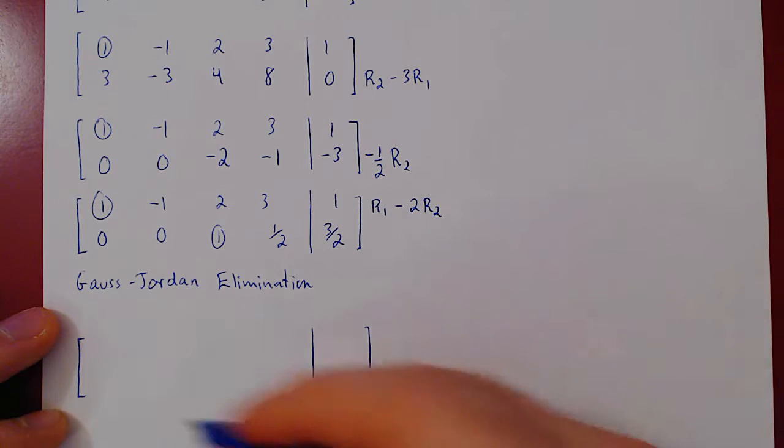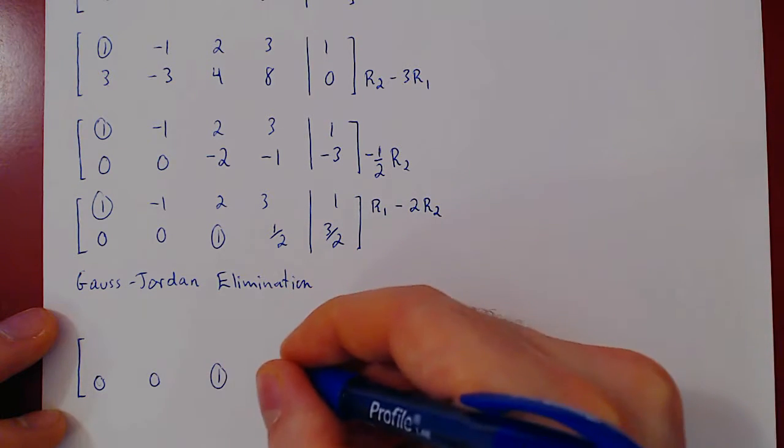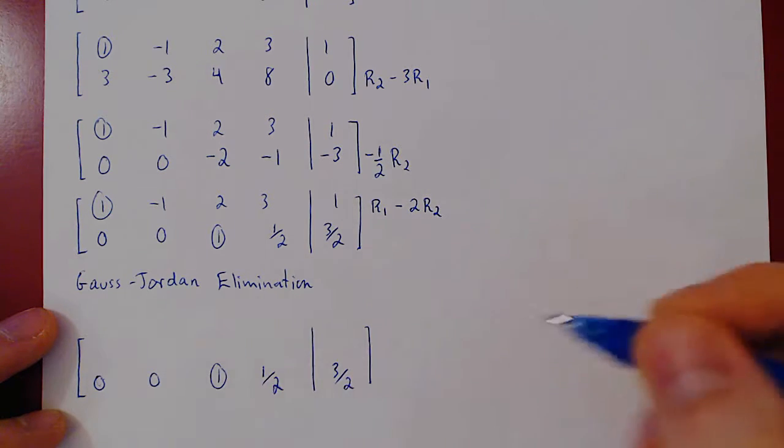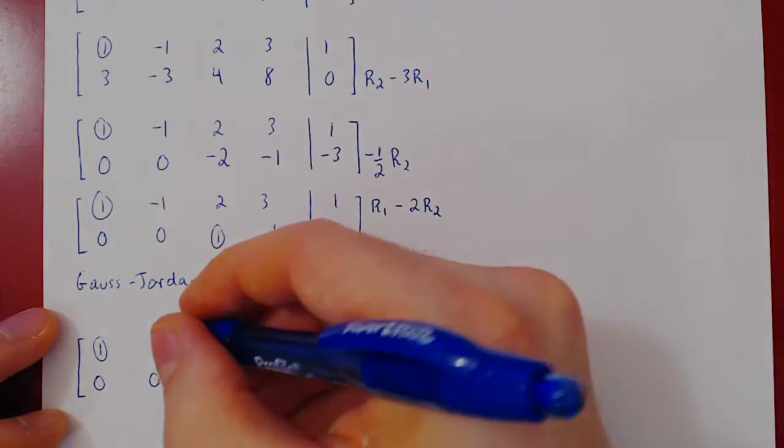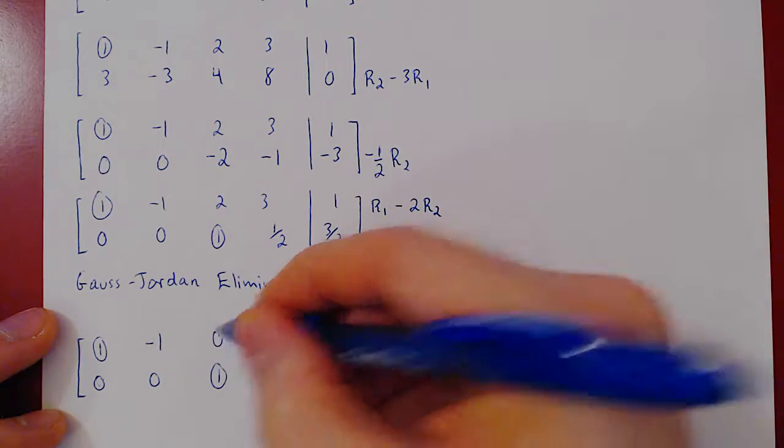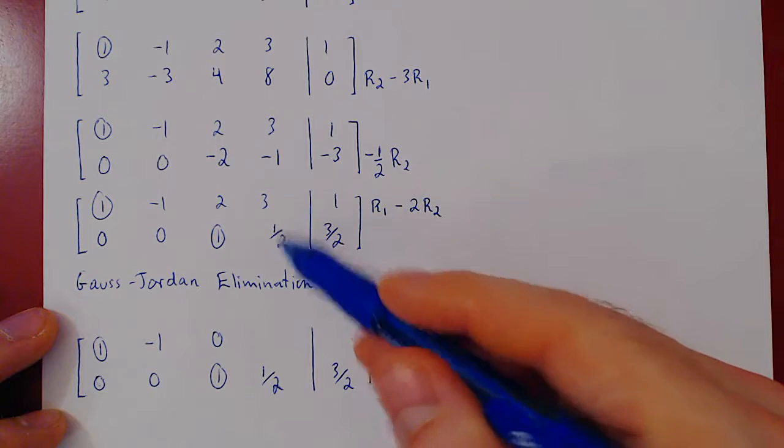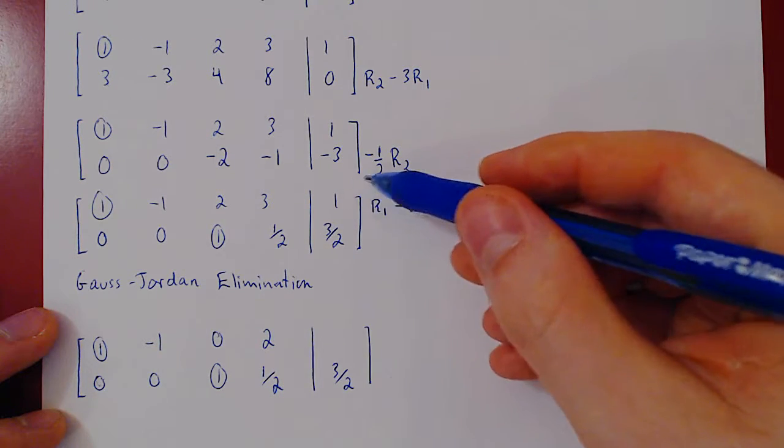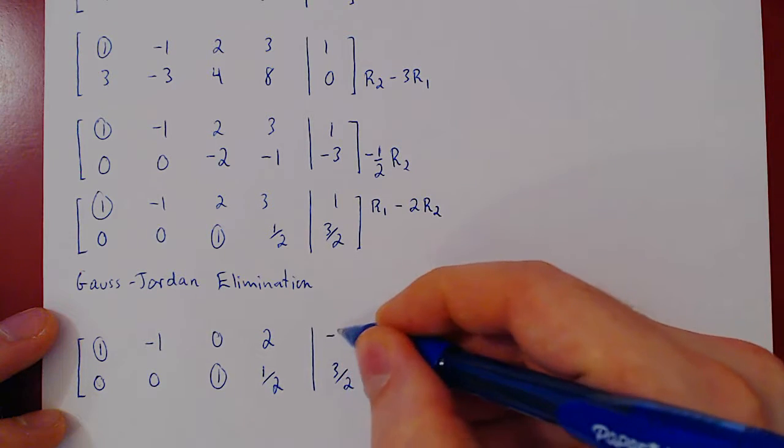We can recopy row 2, we are not changing it. Let's apply the operation, so 1 minus 0, 1. Negative 1 minus 0, negative 1. 2 minus 2, 0. 3 minus 2 times 1 half, which is 1, 3 minus 1 is 2. 1 minus 2 times 3 half, which is 3, 1 minus 3, negative 2.